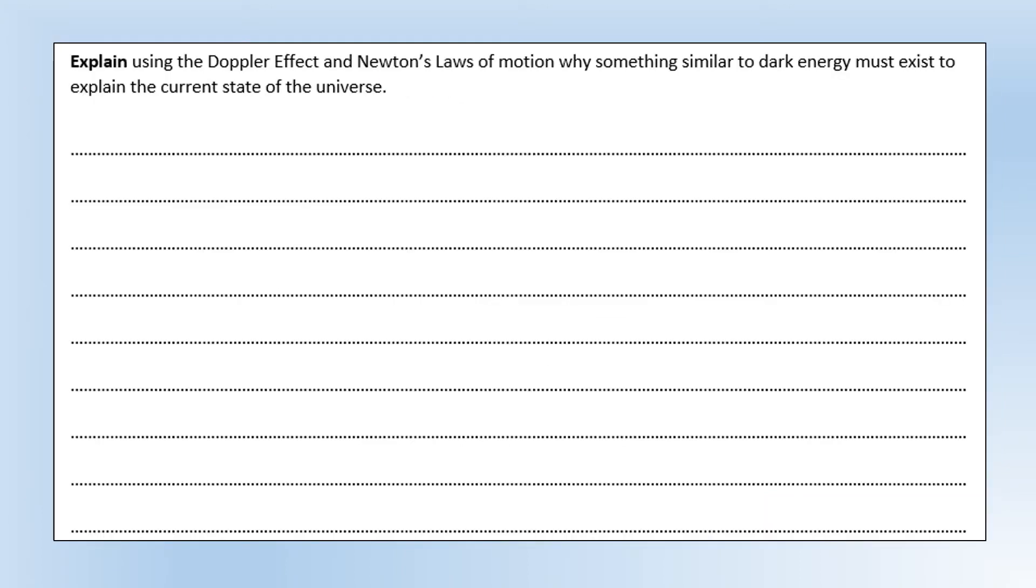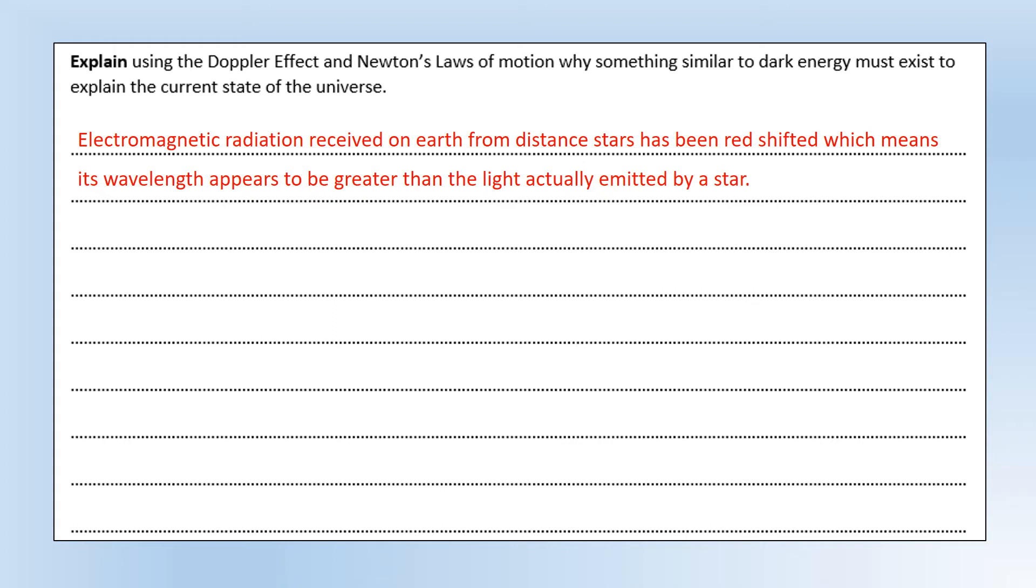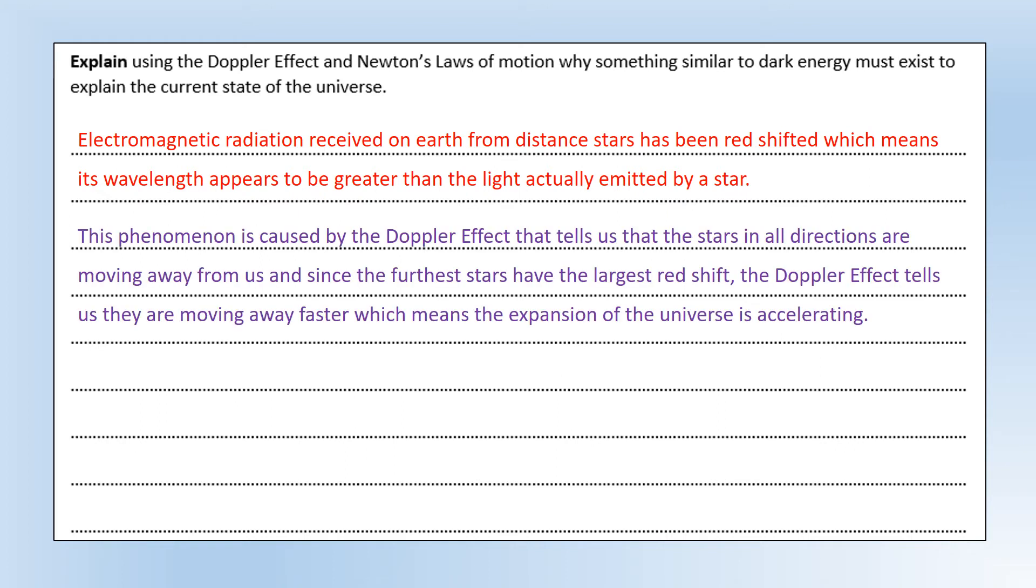Okay, so explain using the Doppler effect and Newton's laws of motion why something similar to dark energy must exist to explain the current state of the universe. So let's first talk about what happens or what we receive on earth. Electromagnetic radiation we receive from any distant star has been redshifted, which means its wavelength appears to be greater than the light was when it was actually emitted by a star. So that's the first thing. The Doppler effect explains this because what it tells us is that that object is moving away from us and that's causing the redshift. And what we also notice is the furthest stars have the largest redshift, so the Doppler effect tells us they are moving away faster and what that tells us is the expansion of the universe is accelerating over time.